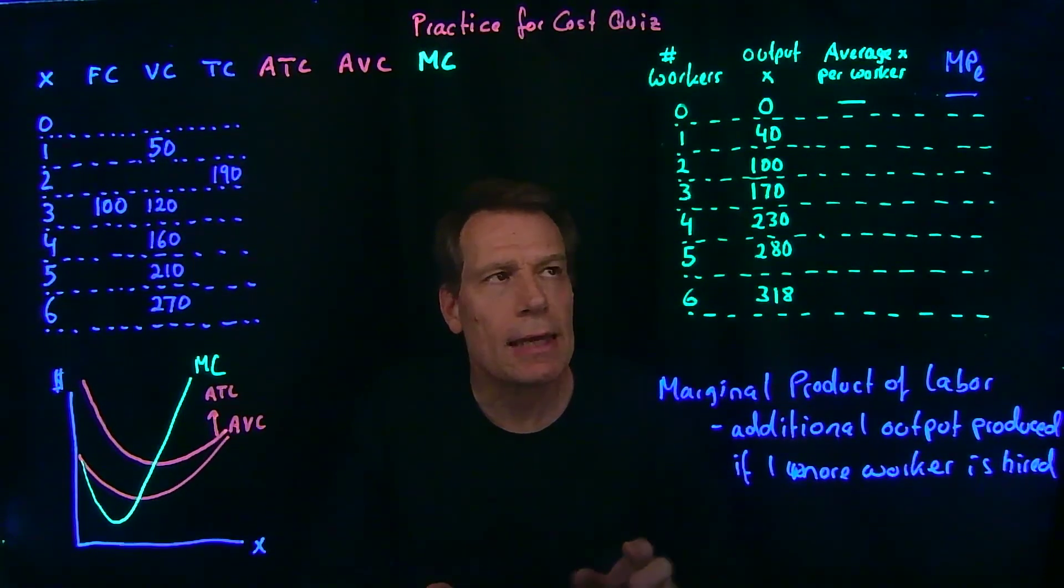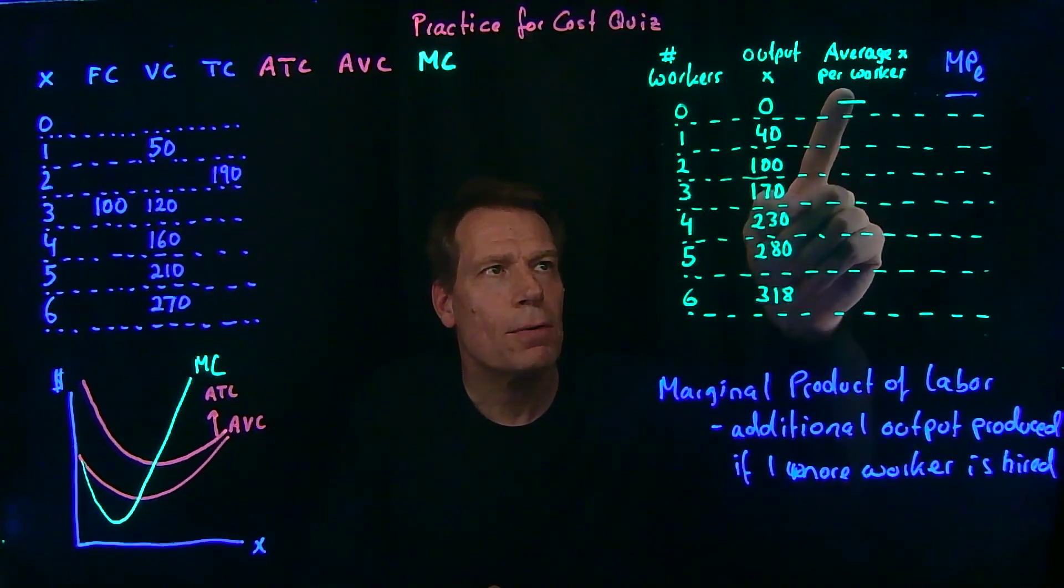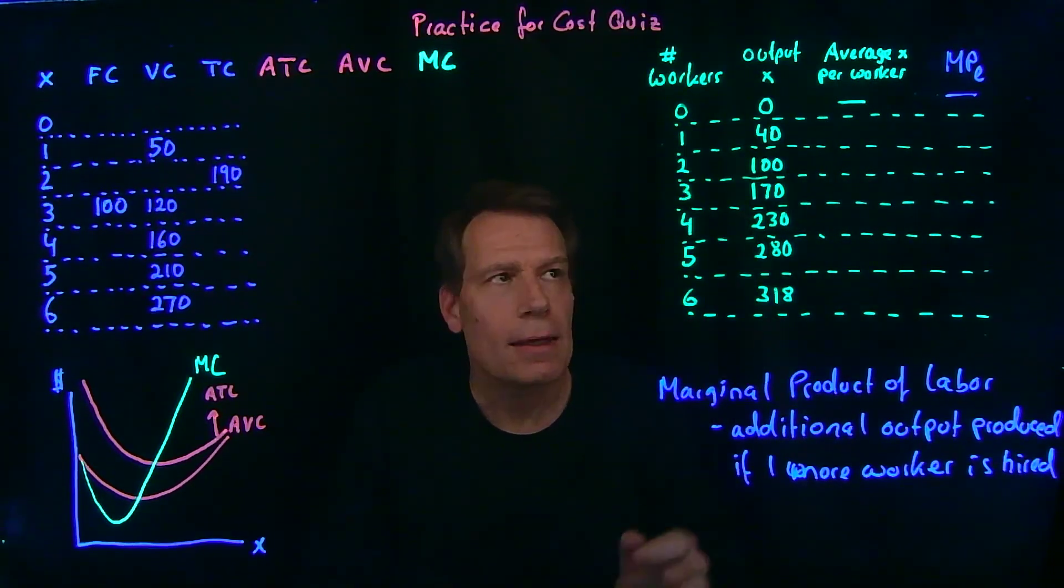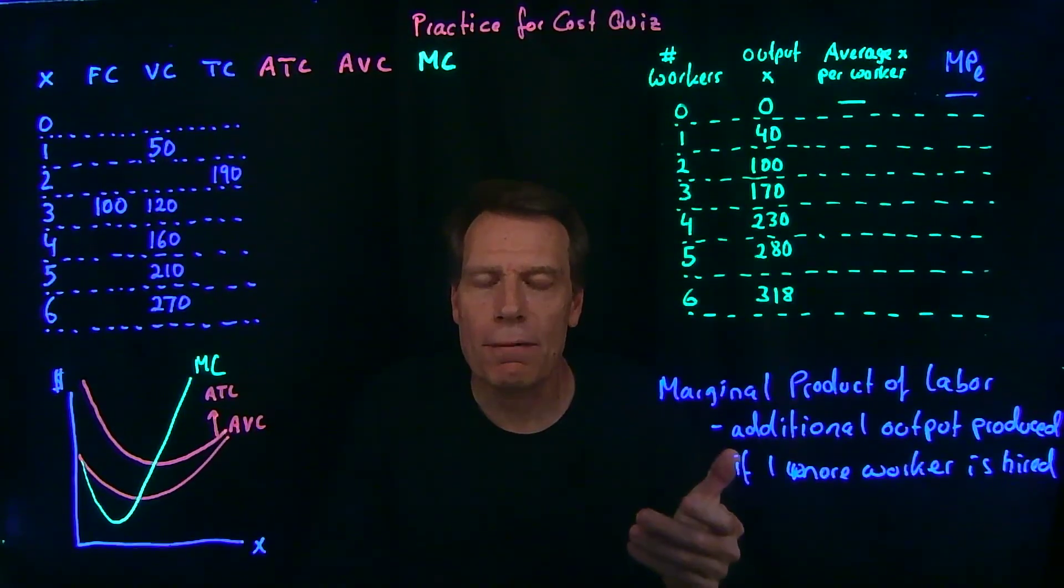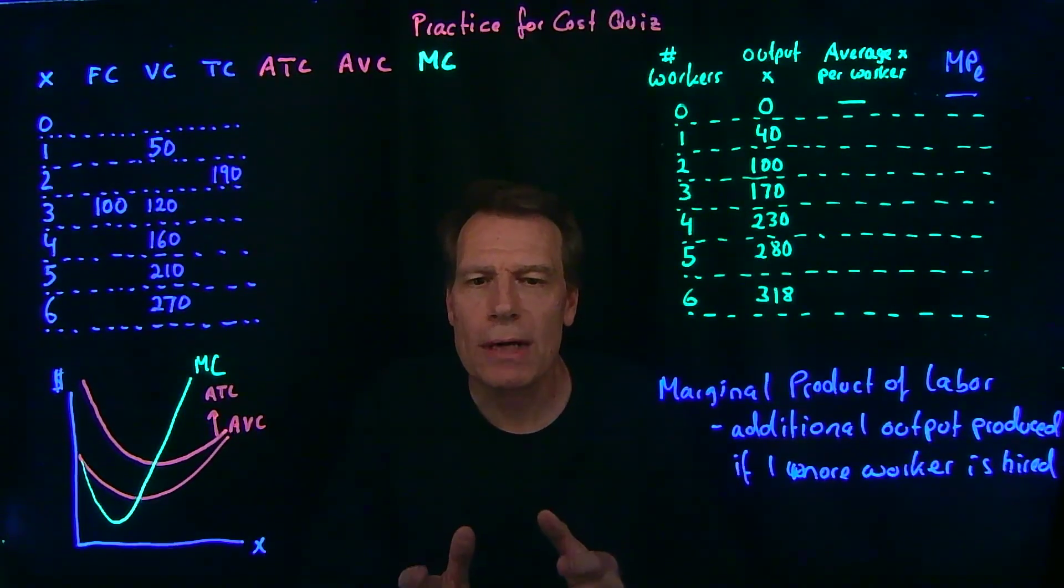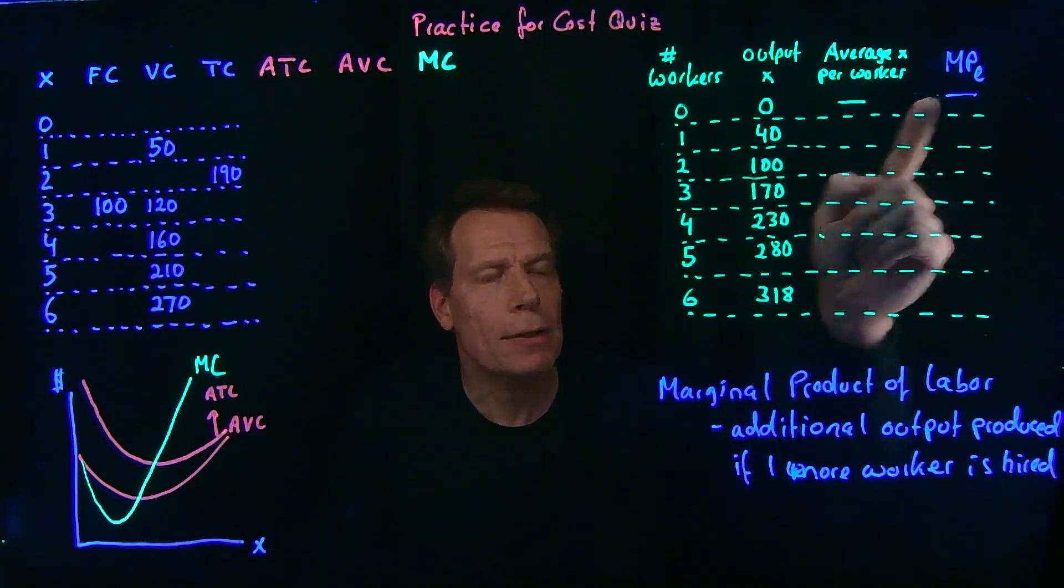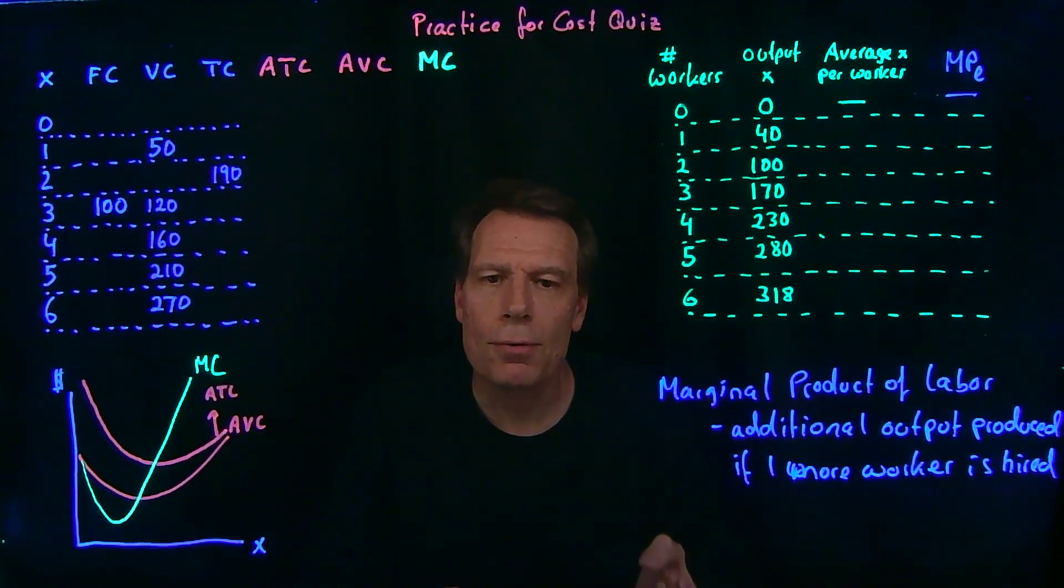So check and see whether that's the case for these last two columns. Is it the case that the only way that the average output per worker is rising is if the marginal product per worker is above the average, and the only way it's falling is if the marginal product of a worker is below the average.